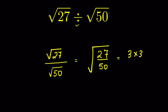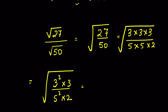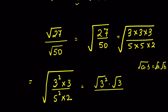Now 27 we can write as 3 times 3 times 3, and 50 as 5 times 5 times 2, all under the square root. Or we can write it as 3 squared times 3 upon 5 squared times 2 under the square root. Using the property that square root of a times b equals square root of a times square root of b, we get square root of 3 squared times square root of 3, upon square root of 5 squared times square root of 2.